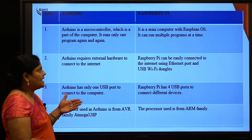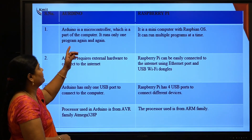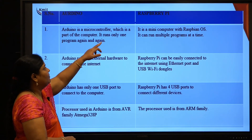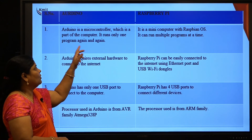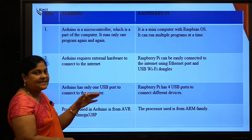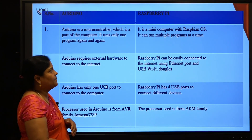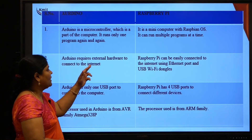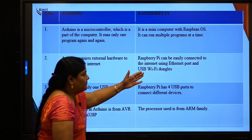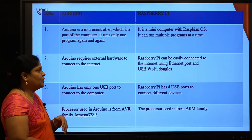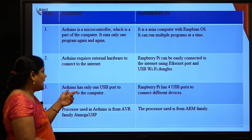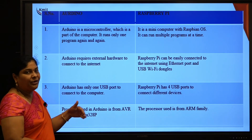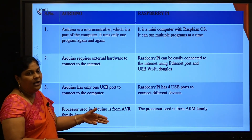Comparing Arduino and Raspberry Pi: Arduino is a microcontroller that runs only one program at a time, while Raspberry Pi is a mini computer with Raspbian OS that can run multiple programs simultaneously. Arduino requires external hardware to connect to the internet, but Raspberry Pi can easily connect via Ethernet or USB port. Arduino has only one USB port, while Raspberry Pi has four USB ports to connect different devices.